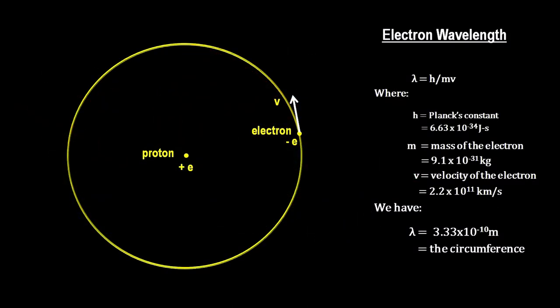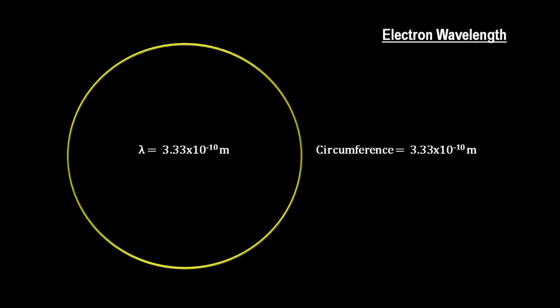Earlier, we calculated the velocity of the electron, so like we did with electron microscopes in the previous segment, we can now calculate its wavelength. When we do, we get exactly the length of the electron orbit's circumference, as enumerated by Bohr.